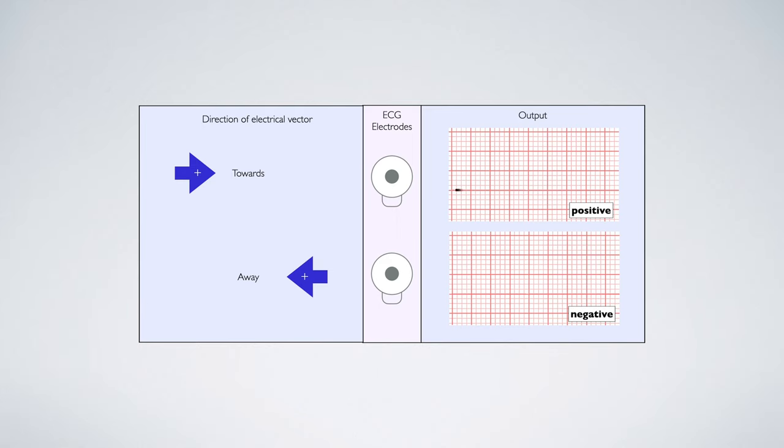And when the vector moves towards the ECG electrodes the resulting wave on the trace becomes more positive. Conversely when the vector moves away the wave becomes more negative.